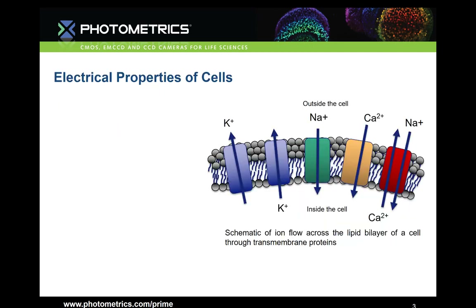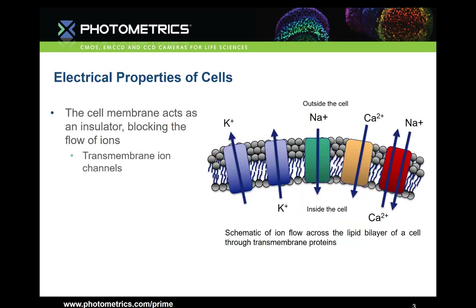The cell derives many of its electrical properties from the cell membrane. The cell membrane is made of a lipid bilayer that acts as an electrical insulator. Ions — namely potassium, sodium, and calcium — hold various charges. Ions move from areas of high concentration to areas of low concentration. The net charge difference between the inside and the outside of the cell is known as the cell's membrane potential.